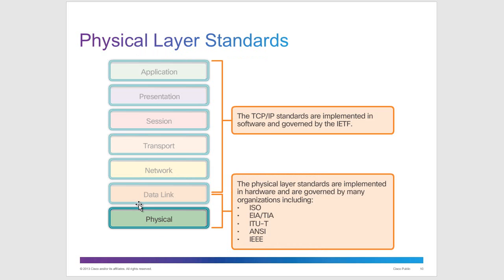Physical layer standards are governed by organizations including the ISO, EIA/TIA, ITU-T, ANSI, and IEEE. The ones to remember are IEEE and ISO. IEEE develops Ethernet, wireless LAN standards, and Bluetooth. The ISO created the OSI model. All of these organizations govern what we use in the physical layer.